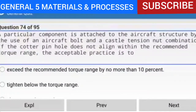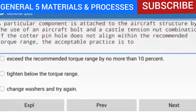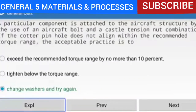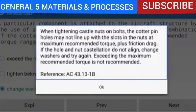Question 74 of 95: A component attached to the aircraft structure with an aircraft bolt and castle tension nut — if the cotter pin hole does not align within the recommended torque range, the acceptable practice is to change washers and try again. When tightening castle nuts, if the hole and nut castellation do not align, change washers and try again. Exceeding the maximum recommended torque is not recommended. Reference: AC 43.